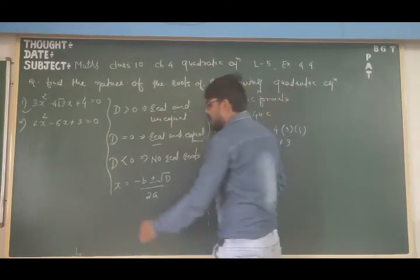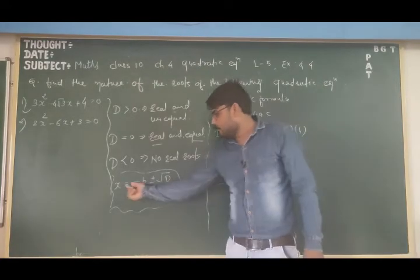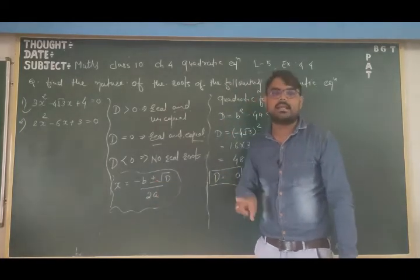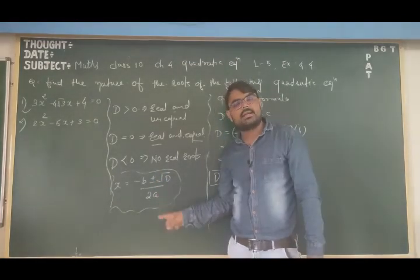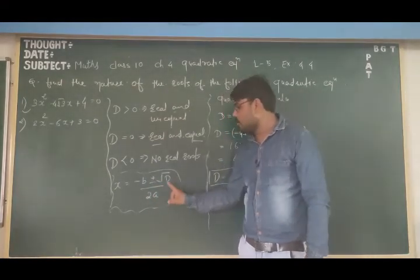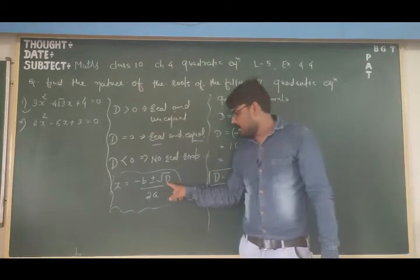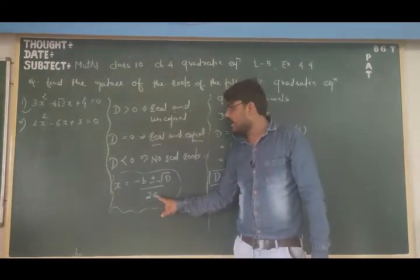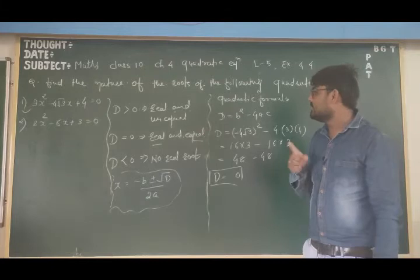To find the roots, use the formula: x equals minus b plus or minus root D, divided by 2a. We take plus once to get one root, and minus once to get the other root. Here, b equals minus 4√3, D equals 0, and a equals 3. So x equals minus(minus 4√3) plus or minus root(0), divided by 2 times 3.